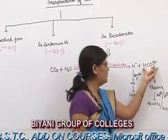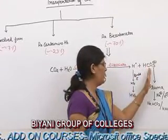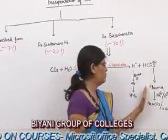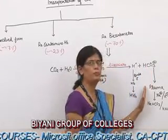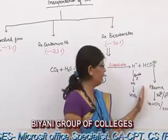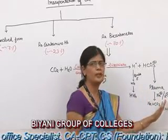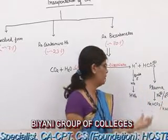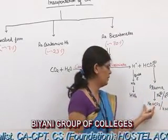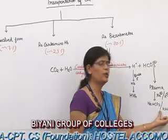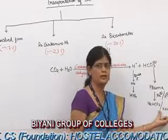The bicarbonate ion passes out from erythrocytes into plasma and binds with sodium or potassium ions to form sodium bicarbonate or potassium bicarbonate.